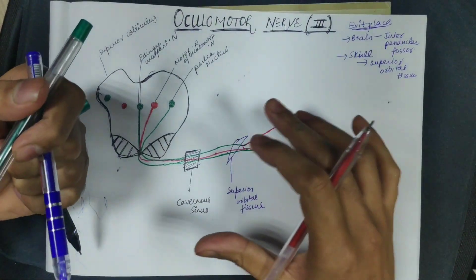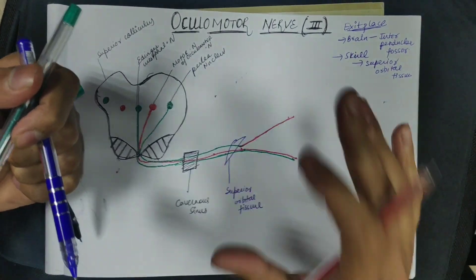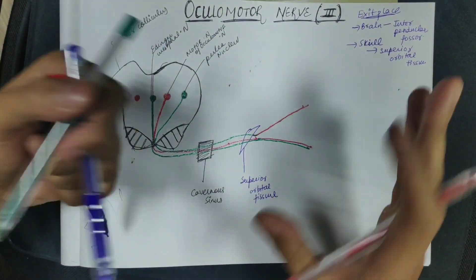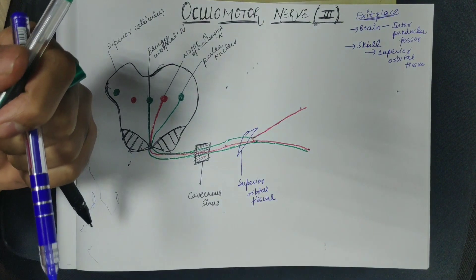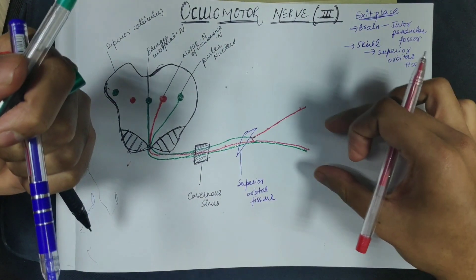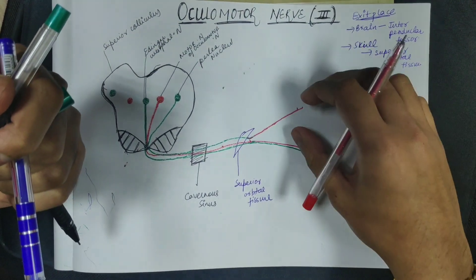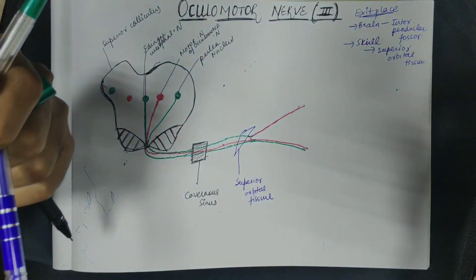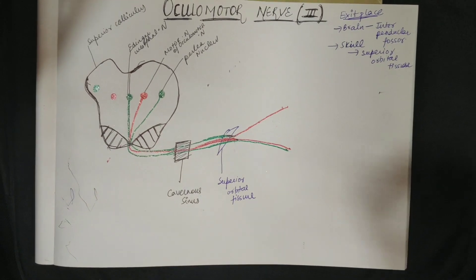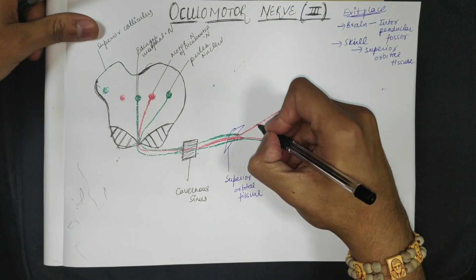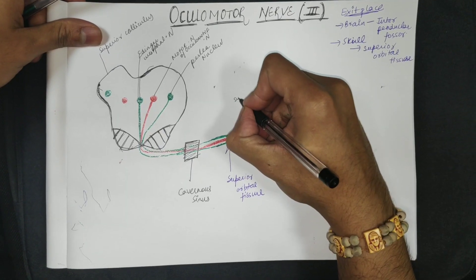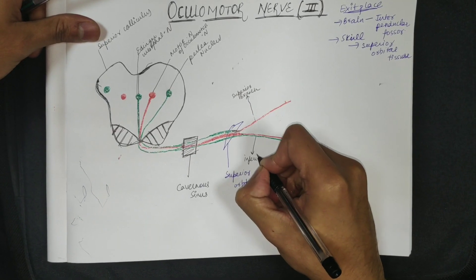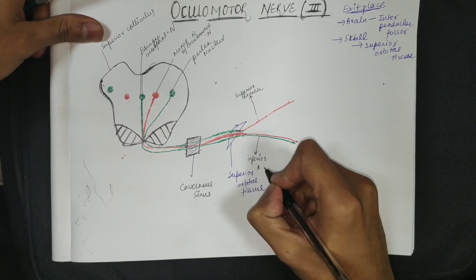The oculomotor nerve supplies the extraocular muscles of the eye — all the extrinsic muscles. There are six extrinsic muscles, but the oculomotor nerve supplies only four of them; the other two are supplied by the trochlear and abducens nerves. The lateral rectus is supplied by the abducens nerve and the superior oblique is supplied by the trochlear nerve. The superior branch contains only motor fibers, while the inferior branch contains both motor and parasympathetic fibers.